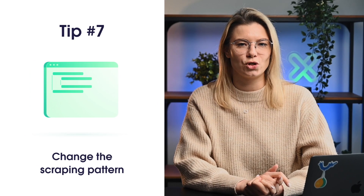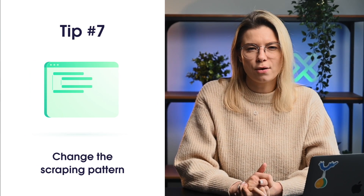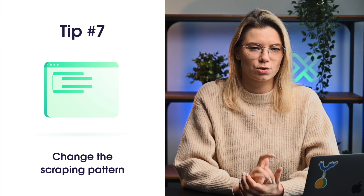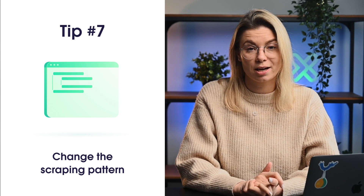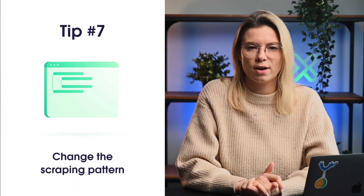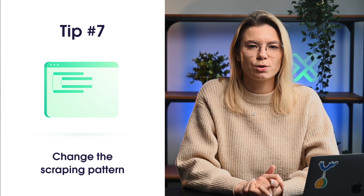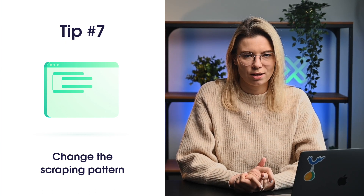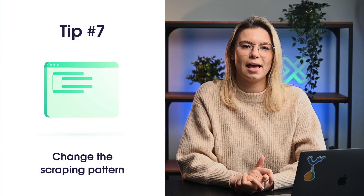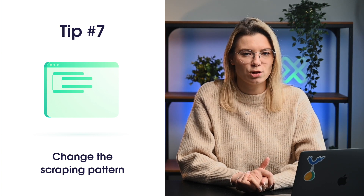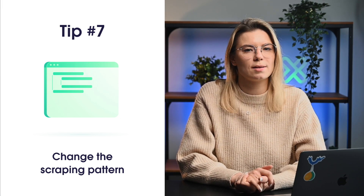Tip number 7 is to change the scraping pattern. The pattern refers to how your scraper is configured to navigate the website. If you constantly use the same basic scraping pattern, it's only a matter of time before you get blocked. One of the best practices when developing a scraping pattern is to think of how a regular user would browse the website and then apply those principles to the tool itself. For example, visiting the home page first and only then making requests to inner pages makes a lot of sense. Additionally, to overcome more advanced anti-scraping mechanisms, you can add random clicks, scrolls, and mouse movements to make your web scraping seem less predictable — though beware that behavior shouldn't be completely random.